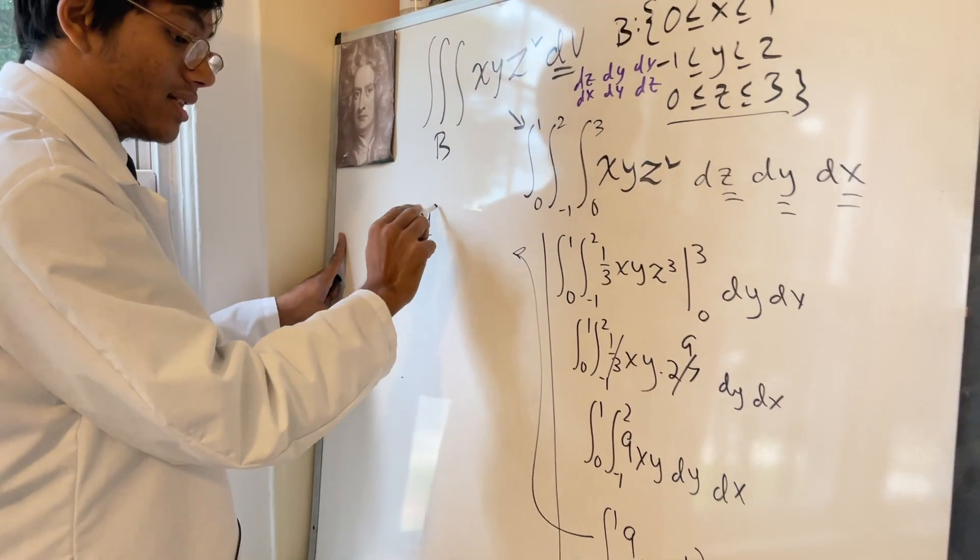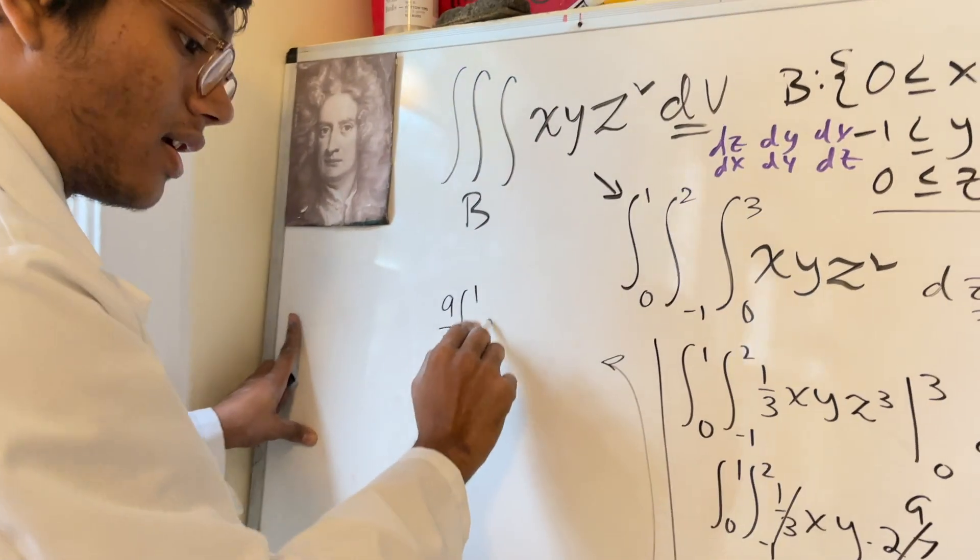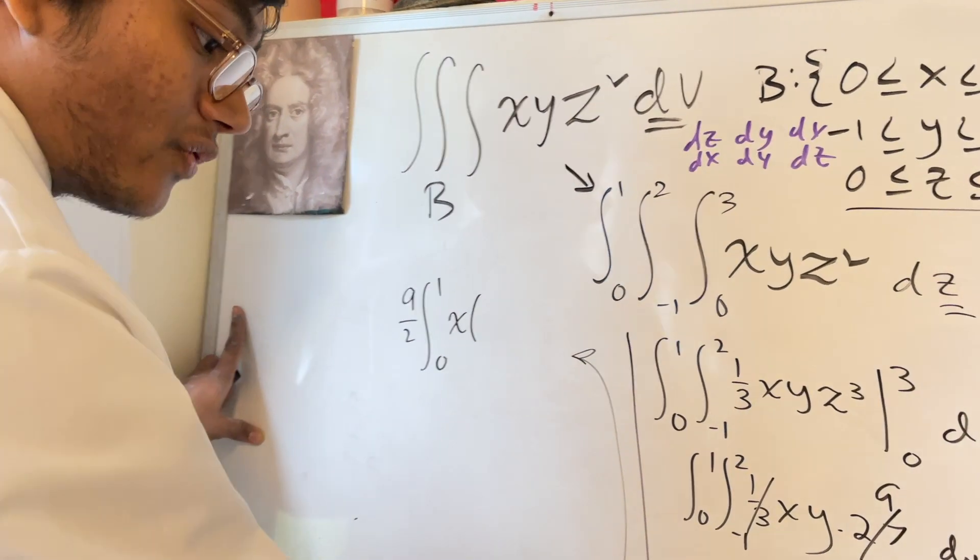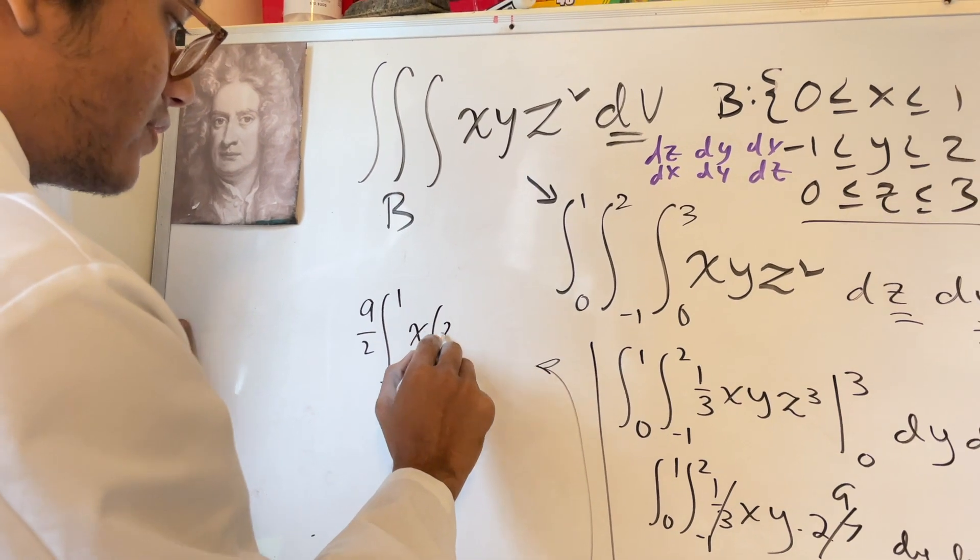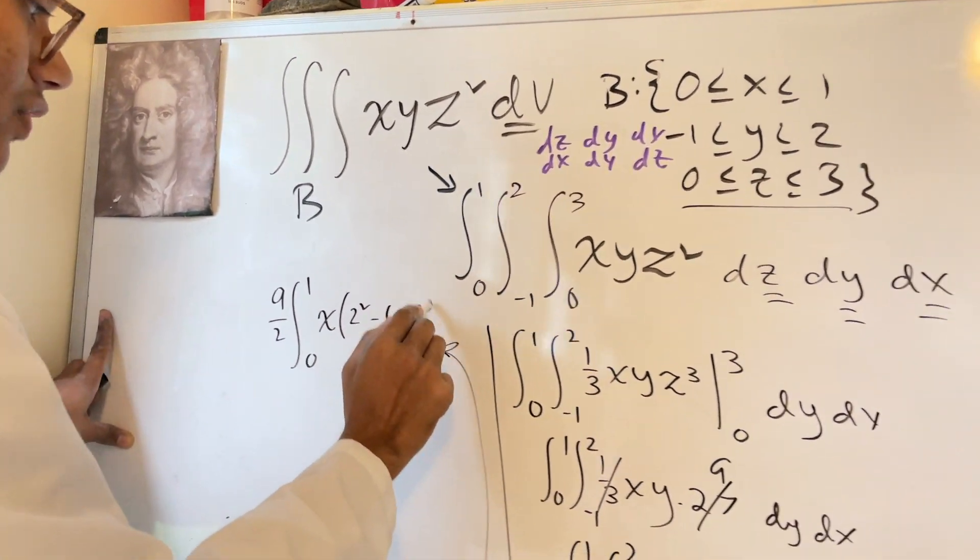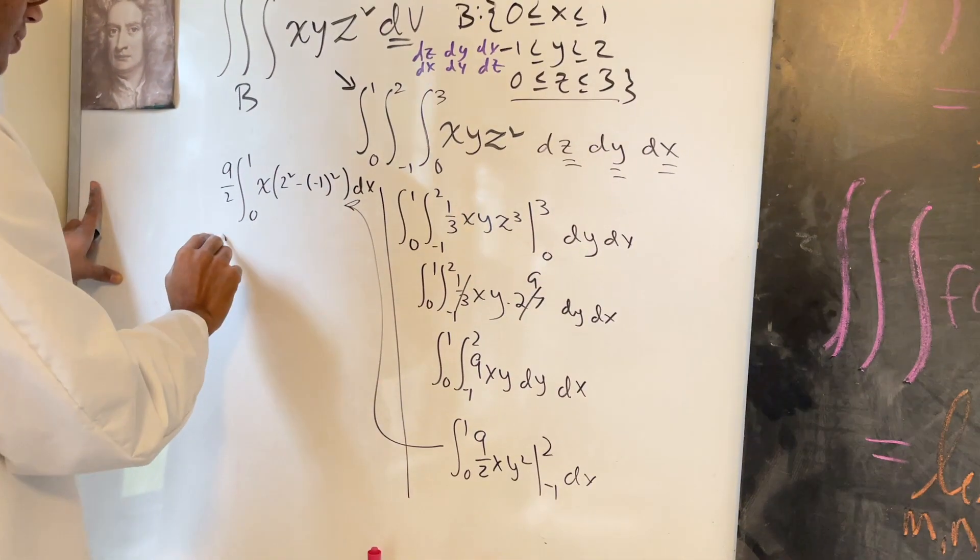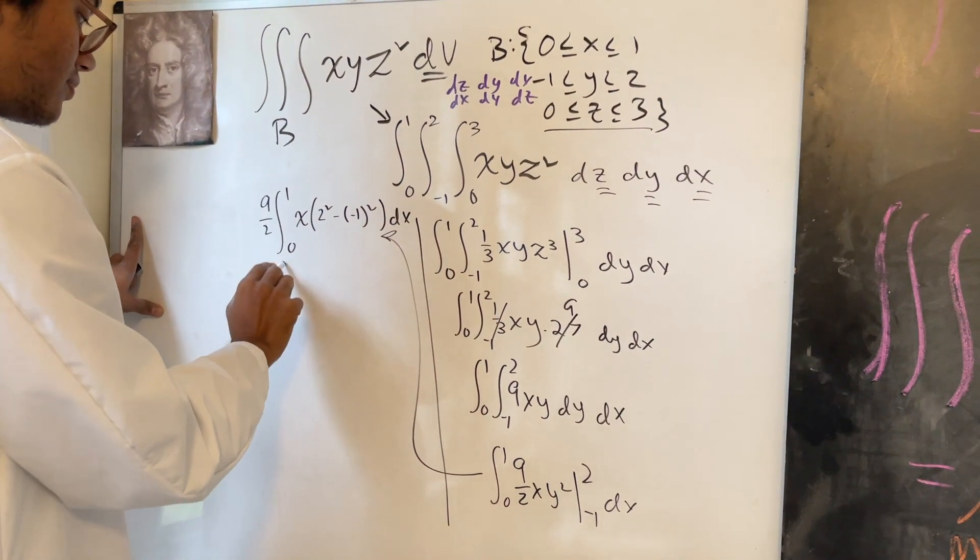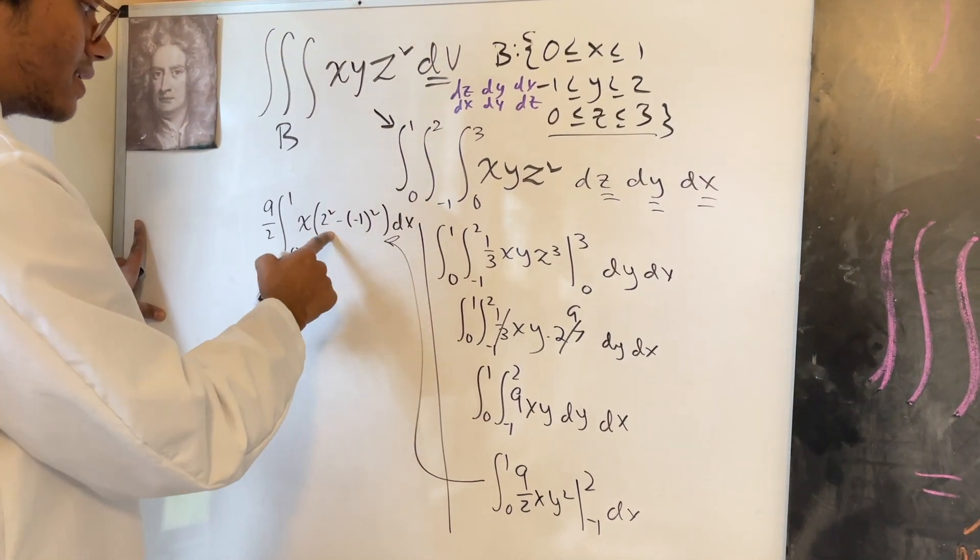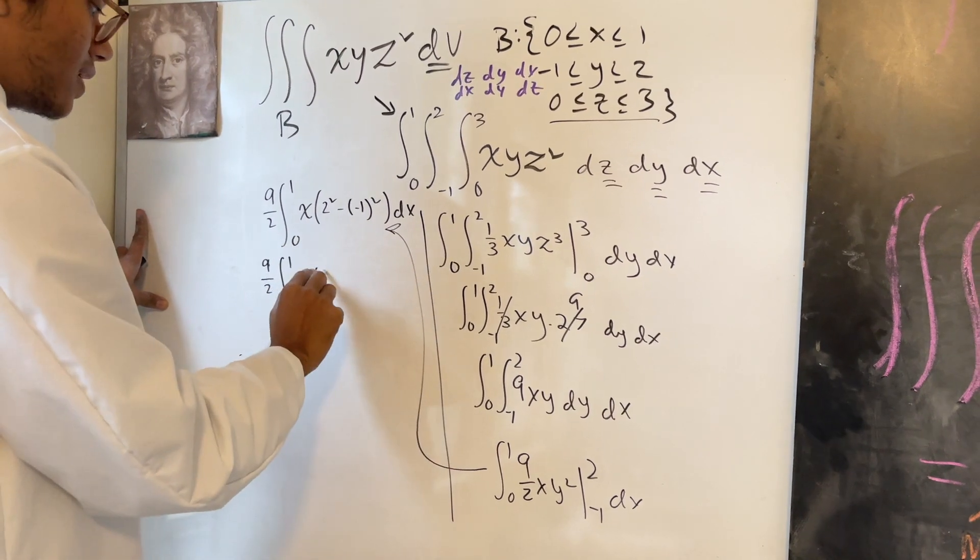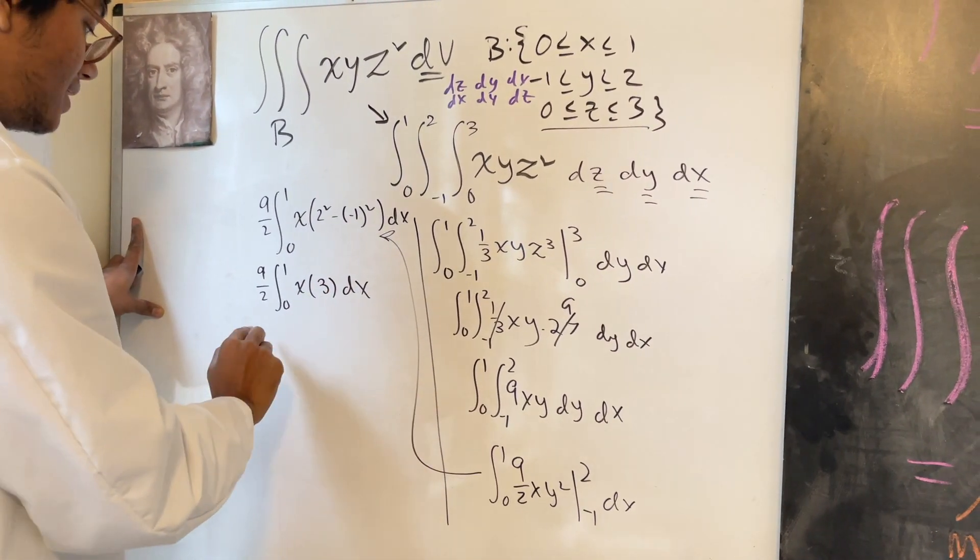I'm going to be left with—let's take the constant outside—9/2, and I have the integral from 0 to 1 of x times (2² - (-1)²) dx. So I'll be left with 9/2, the integral from 0 to 1 of x (4 - 1) dx. So I'll have x times 3 dx.